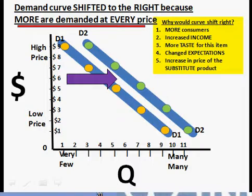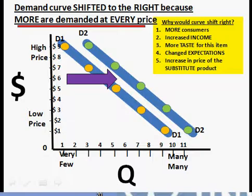Finally, if there is an increase in the price of a substitute product — by substitute we mean something the consumer would equally prefer to our item. So let's say coffee and tea might be substitute items; a person would just as willingly drink tea as coffee. If the price of tea suddenly skyrocketed, then people who had been drinking tea would switch to coffee. So if the price of that substitute product increased, there would be more demand at every price for our item — coffee.